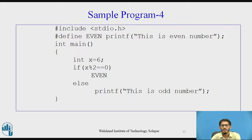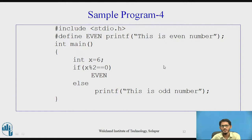We have one more case where a macro can be used: to replace an entire statement. Here a macro named EVEN is used to replace the entire statement `printf("This is even number")`. If x modulo 2 equals 0, meaning x is even, we use the macro EVEN. At pre-processing, EVEN is replaced with the printf statement. Since x is 6, which is even, the output will be 'This is even number'.